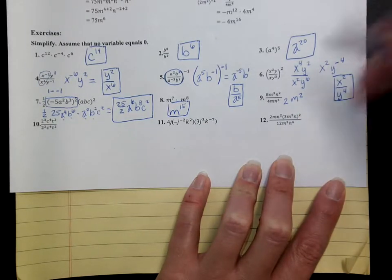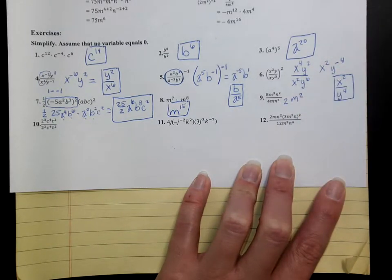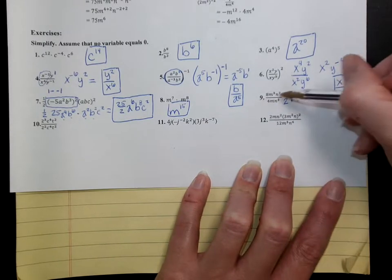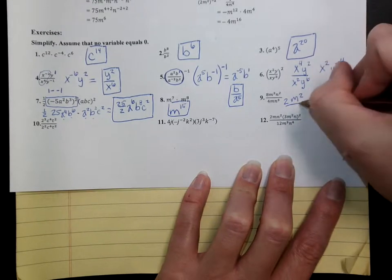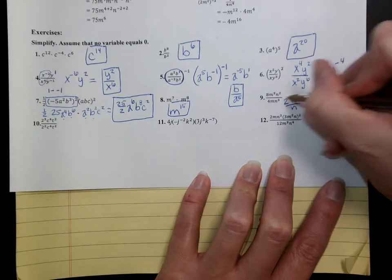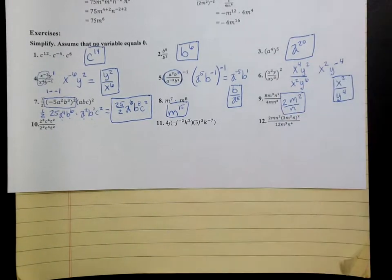I have 2 n's on top and 1 n on the bottom. That's going to be n to the negative 1. Or since there's more in the denominator, I'm just going to leave the n in the denominator. I actually skipped a step there — feel free to do that when you work on your own, but if you need to write it out, you can do that too.